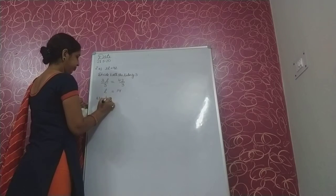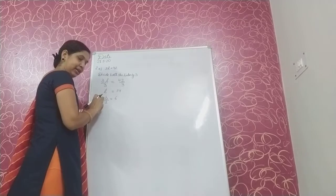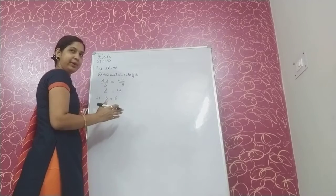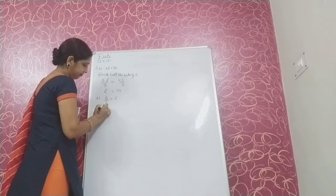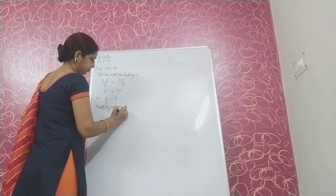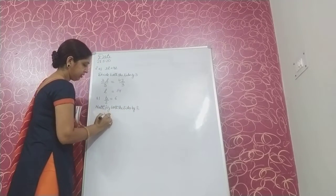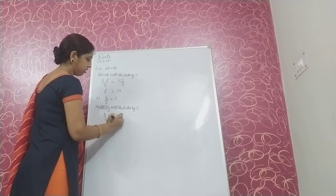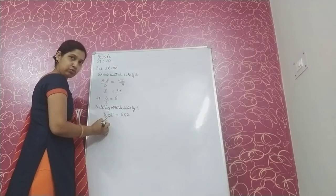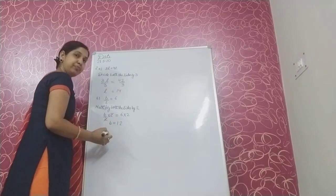Next part: B upon 2 is equal to 6. Here we have variable B. B is being divided by 2. To remove this 2, we multiply both sides by 2. B upon 2 multiplied by 2 is equal to 6 multiplied by 2. The 2s cancel on the left side, so we have B only. On the right side we have 12. So the value of B is 12.